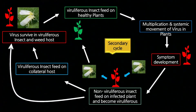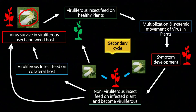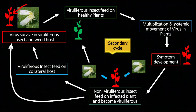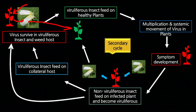अब देखते हैं disease cycle के बारे में। वायरस का disease cycle बिल्कुल simple होता है। जो वायरस है वो insect में या infected weed host में survive करता रहता है। अगले season में जब चिली का plant लगाया जाएगा, तो viruliferous whitefly इसमें feed करेंगे और वायरस को plant में transmit कर देंगे।